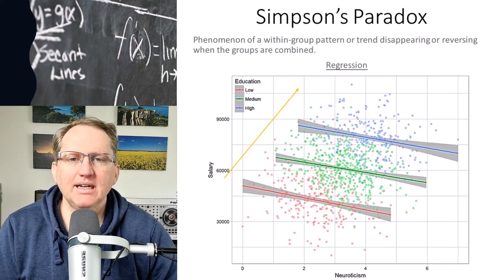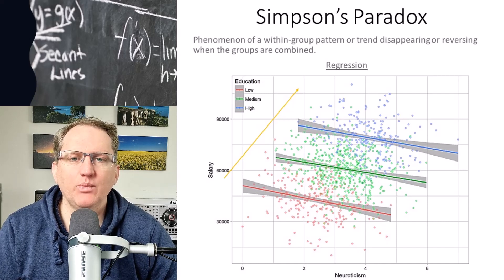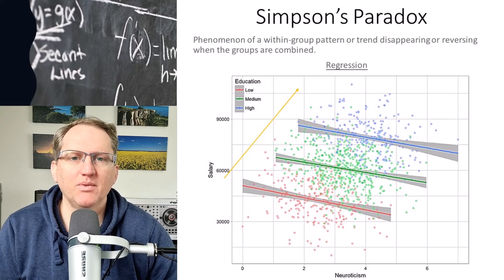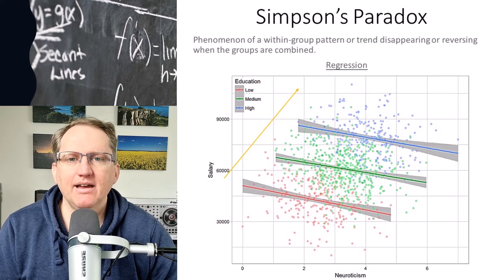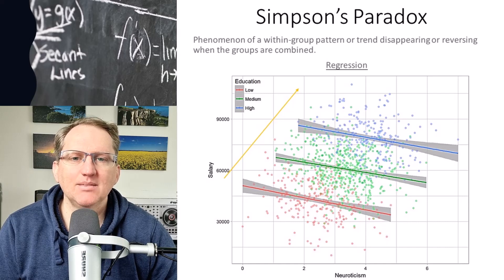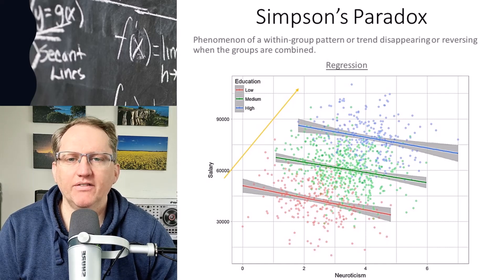Basically what it is, is this idea that we might have a pattern within some of our groups but when we merge our groups together we find that the pattern either disappears or sometimes it can be reversed.